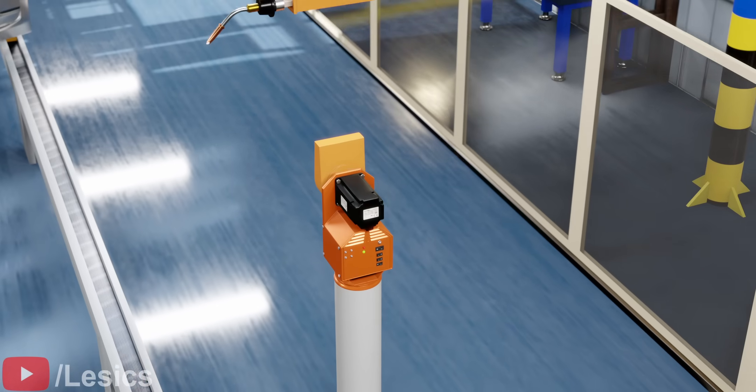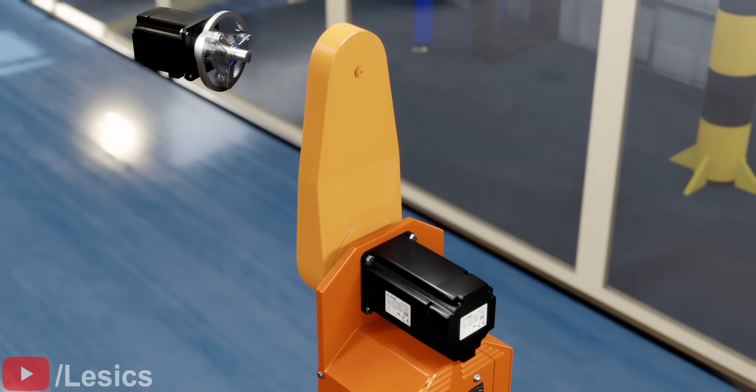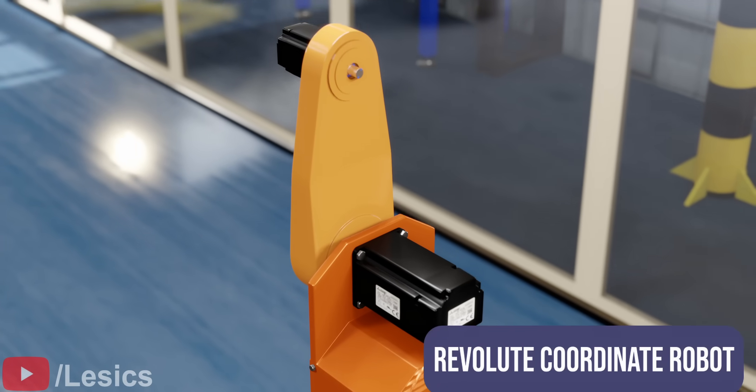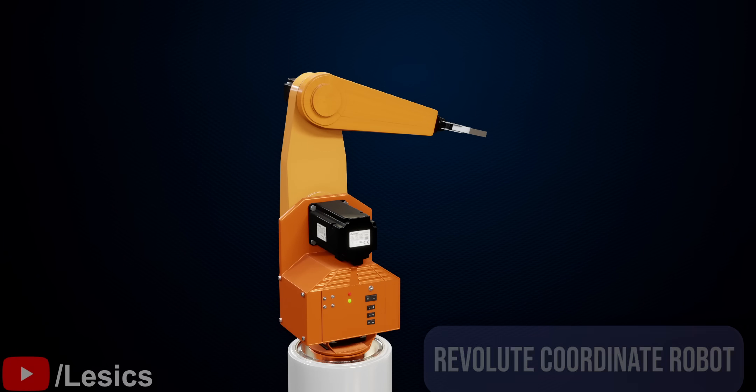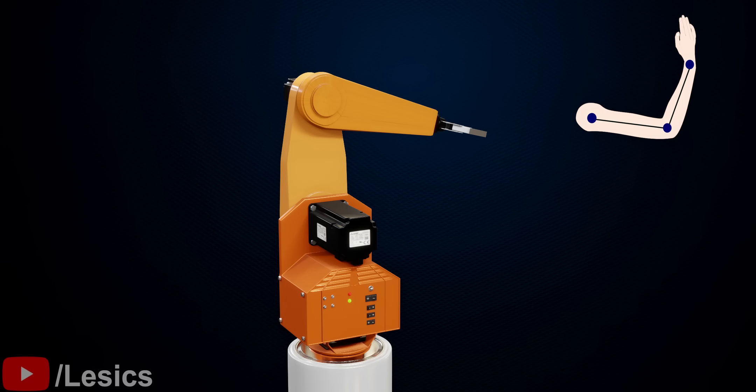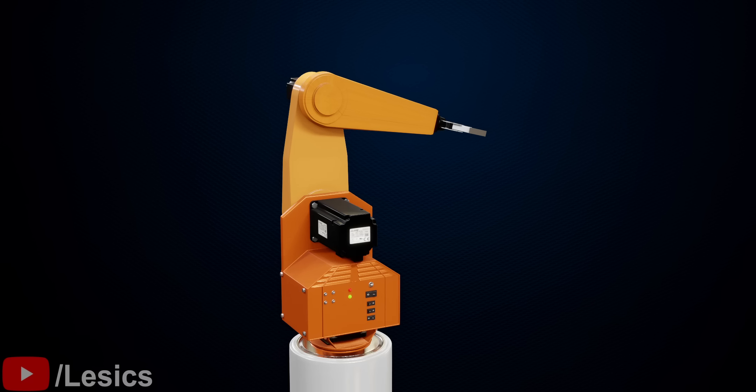If we replace the last linear joint from our bot with another rotary joint, this will make it a revolute coordinate robot, which should reduce the dead zone and give the bot more reach. This robot looks similar to a human arm, right? Now, the new challenge. Let's deduce its work envelope.